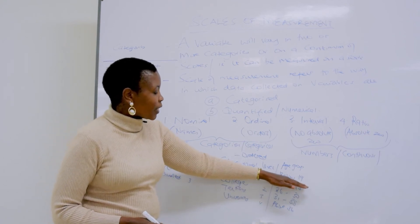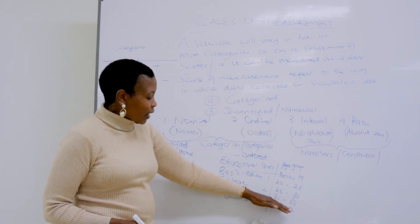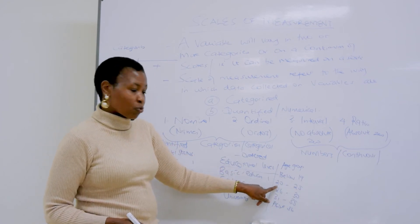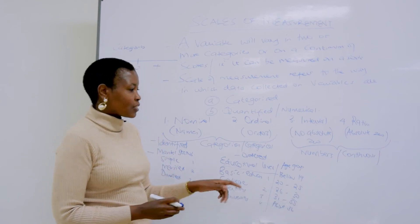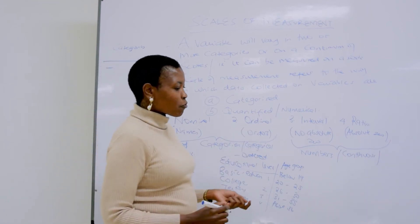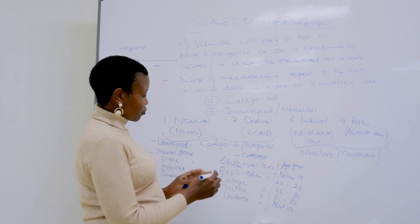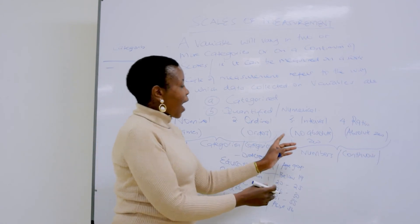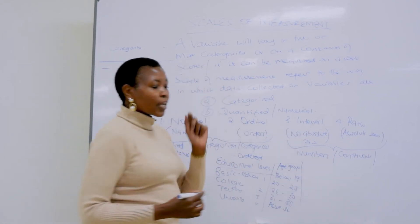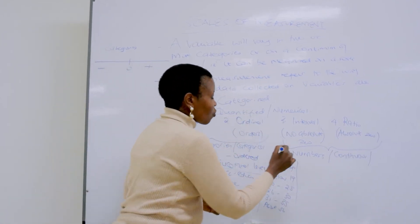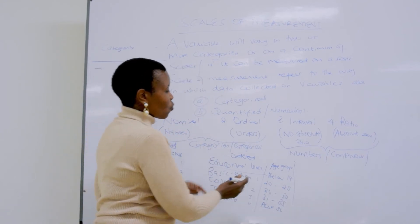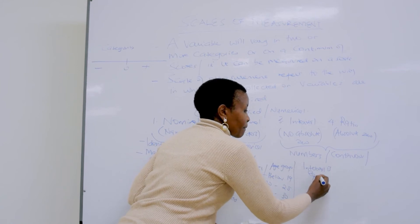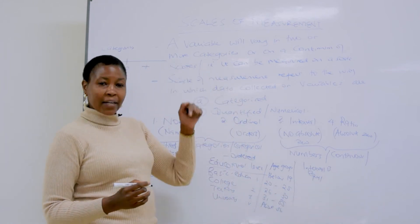The number of years in the category below 19 and the category above 36 will not be the same as the number of years between 20 and 25 or 26 to 30. Then we move to the third one, which is interval. Interval variables are those whose intervals between them are equal, but they do not have an absolute zero.